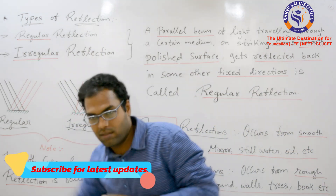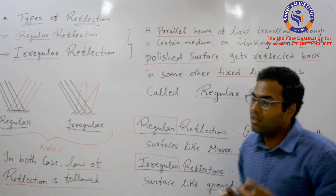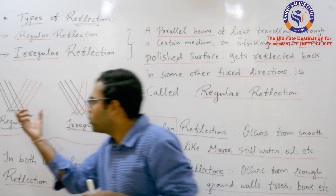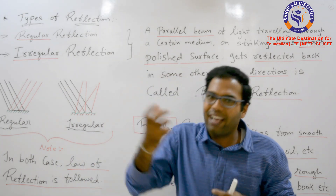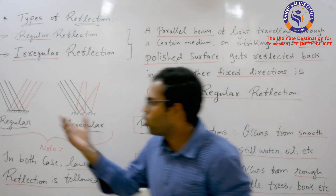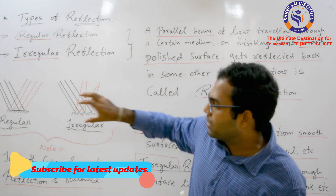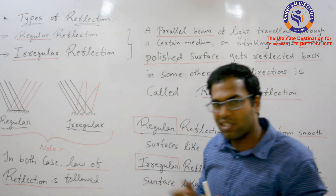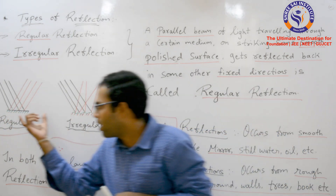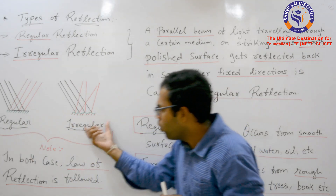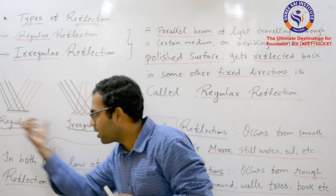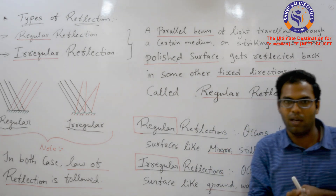The name suggests what it is. Regular reflection means that when a bundle of rays coincides on a smooth polished surface and reflects back with the same angle — that is regular reflection. Irregular reflection, on the other hand, means the surface is a rough surface. This is the most important and main difference between the two types of reflection.